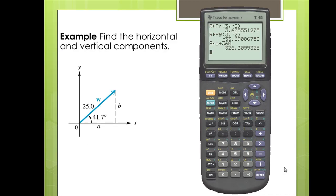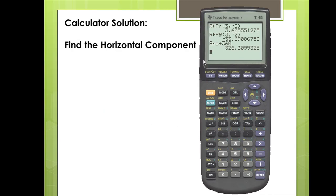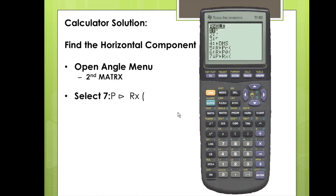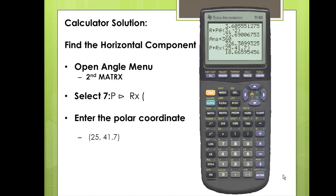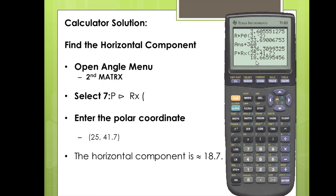Next we'll find the horizontal and vertical components of a vector. We're given that the magnitude is 25 and the direction angle is 41.7 degrees. To find the horizontal component, we open the angle menu with second and matrix, select the seventh option, and enter the polar coordinates: magnitude 25 and direction angle 41.7. We close off the function and we have a horizontal component of 18.7.